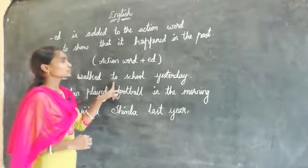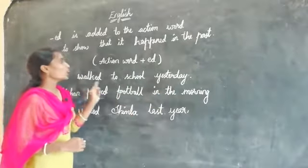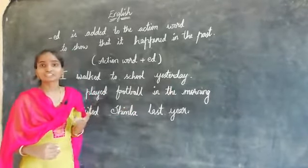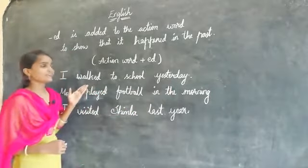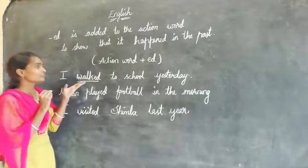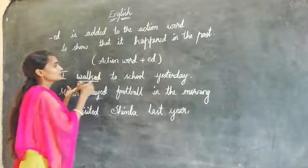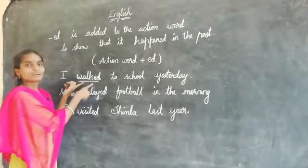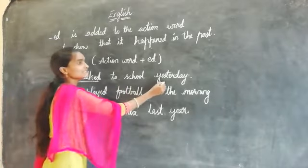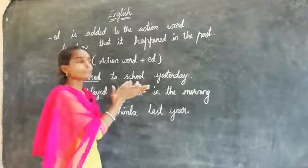For example: I walked to school yesterday. See children, what is the action word in this sentence? Yes — walked. We have added '-ed' to 'walk' in this word. Why did we add it? Because 'I walked to school yesterday' — this situation already happened yesterday.